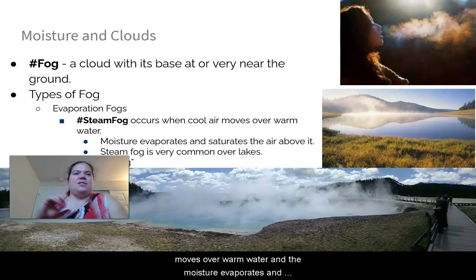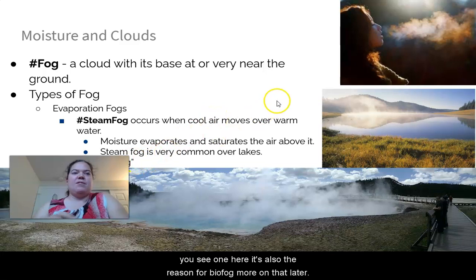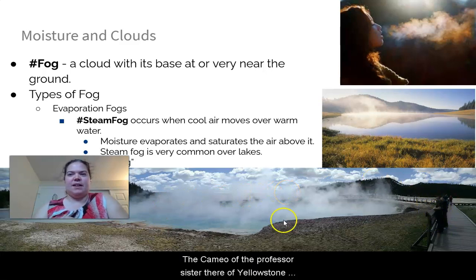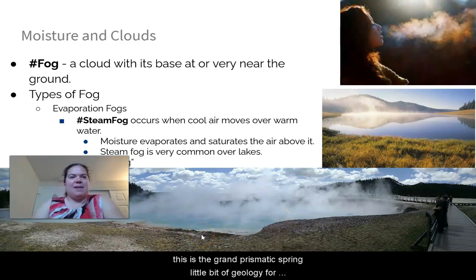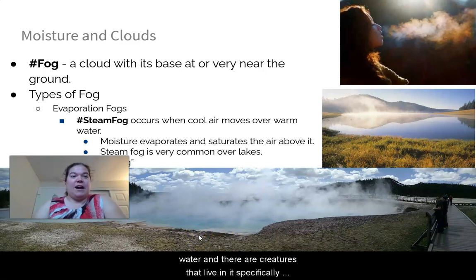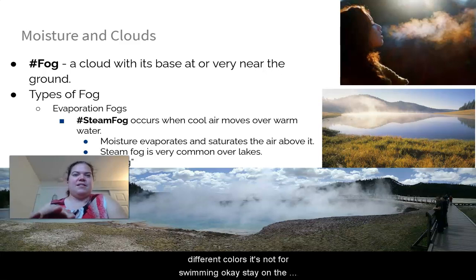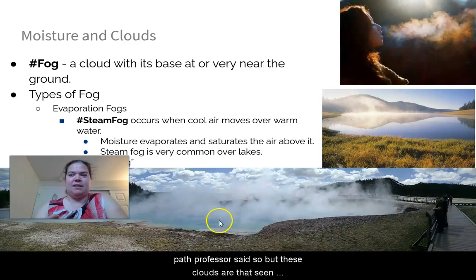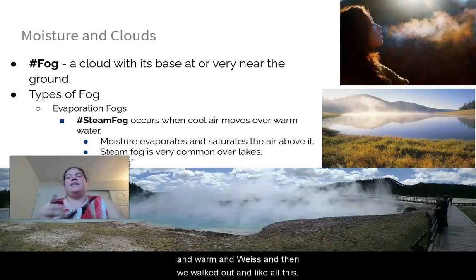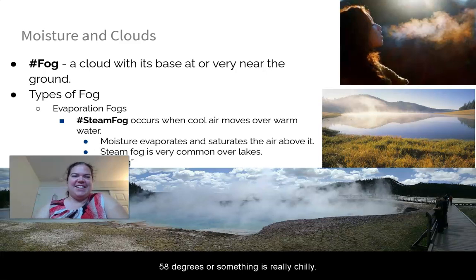Type four is steam fog — occurs when cool air moves over warm water, causing moisture to evaporate and saturate the air above. It's very common over lakes and is why you see steam rising from the water. At Yellowstone's Grand Prismatic Spring, the extremely hot water — home to heat-loving bacteria that create the vivid colors — produces dramatic steam fog over the spring.